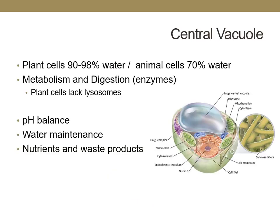The large central vacuole of plant cells is 90 to 98% water, compared to animal cells which are about 70% water. The central vacuole contains enzymes involved in metabolism and digestion, so plant cells lack lysosomes because their digestive enzymes are contained in the large central vacuole. The central vacuole is also responsible for pH balance of the cell because it contains buffers, and it plays a role in water maintenance of the cell and contains nutrients and waste products.